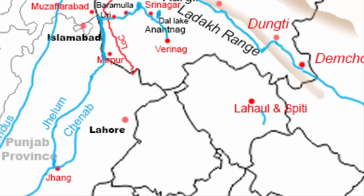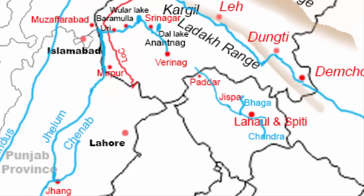The Chandra stream originates from the south, near the Pin Valley National Park. The Bhaga stream originates from the north, near Jispa, and joins the Chandra river near Tandi. Together, these two streams form the river Chenab, making it flow in the north-west direction for about 130 km, when it crosses the Pangi valley before entering the Padar area of Doda district of Jammu province in Jammu and Kashmir state.